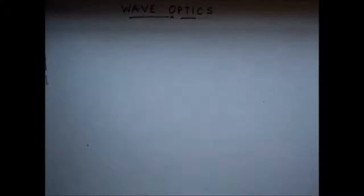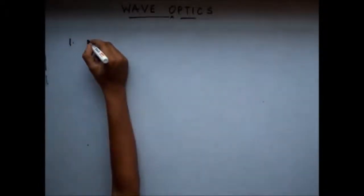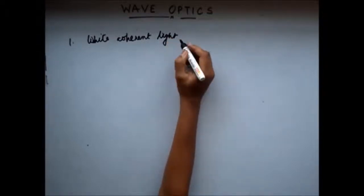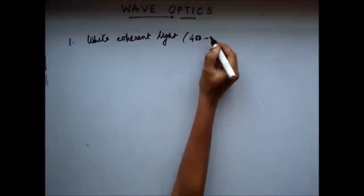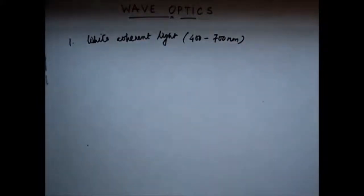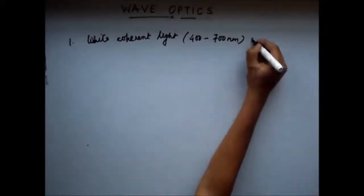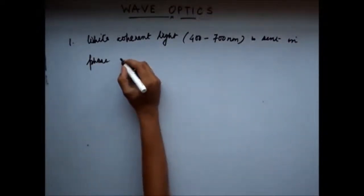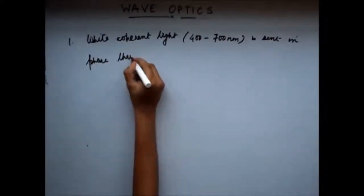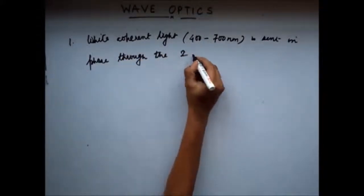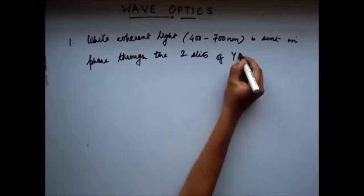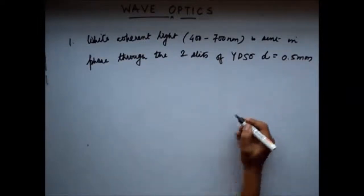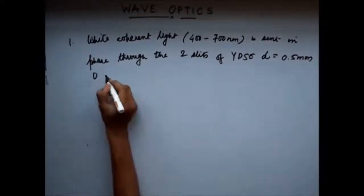The first problem is as follows. It says a white coherent light. Since it is white light, the wavelength varies from 400 to 700 nanometers. It is sent in phase through the two slits of YDSE — Young's double slit experiment. The distance between the slits is given as 0.5 millimeter, and the distance between the slits and the screen is given as 50 centimeter.